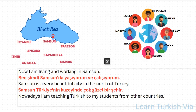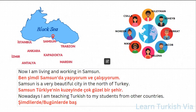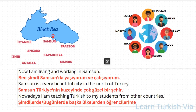And the last sentence, it says: Nowadays, I'm teaching Turkish to my students from other countries. Nowadays — now: şimdi, nowadays: şimdilerde or bugünlerde. From other countries: other — başka, country — ülke, countries — ülkeler, from — ülkelerden, so from other countries: başka ülkelerden. Student — öğrenci, students — öğrenciler, my students — öğrencilerim, to my students — öğrencilerime. Turkish — Türkçe. Teach — öğret, teaching — öğretiyor, I am teaching — öğretiyorum.